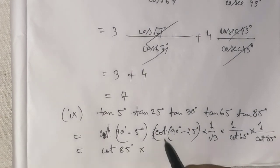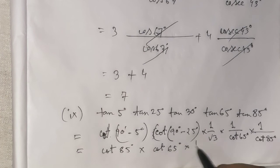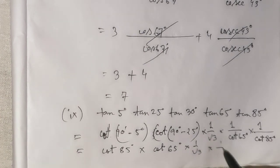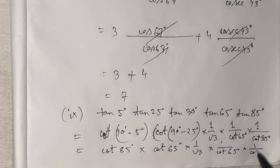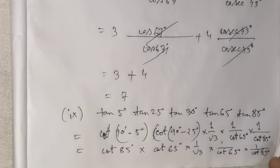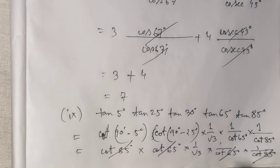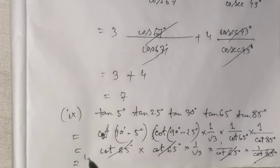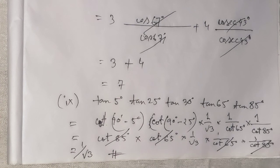So the expression becomes 1 × 1 × (1/√3) = 1/√3. Using cot65° equals tan25° and cot85° equals tan5°, we confirm the answer is 1/√3.